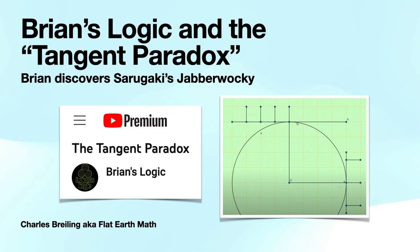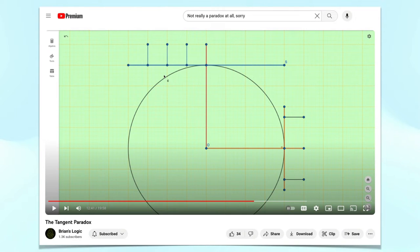A few days ago, Brian recorded a video proposing that folks who know the Earth as a globe have a paradox—that it is impossible to have a tangent to planet Earth be horizontal. We'll analyze his claim here.